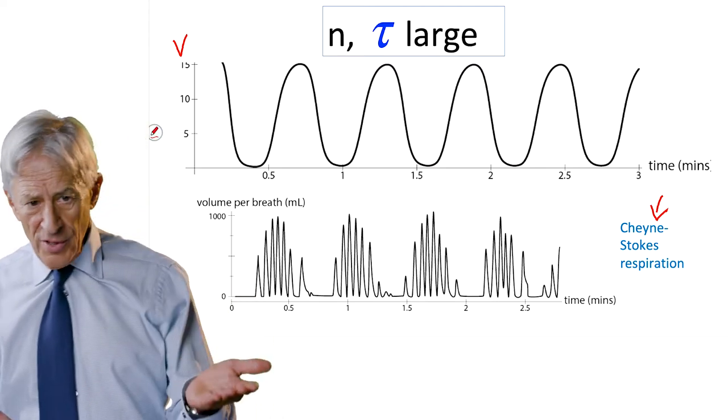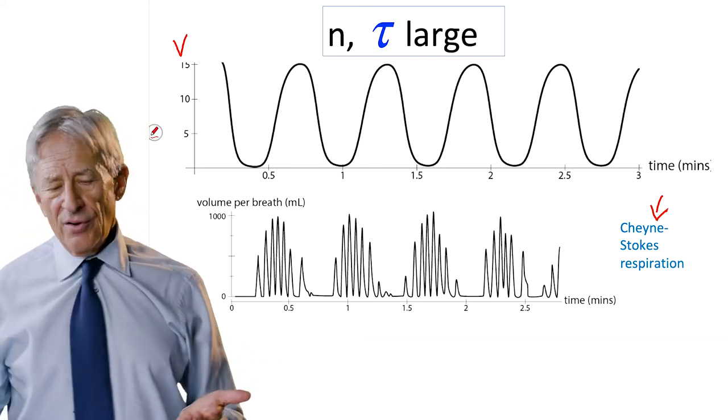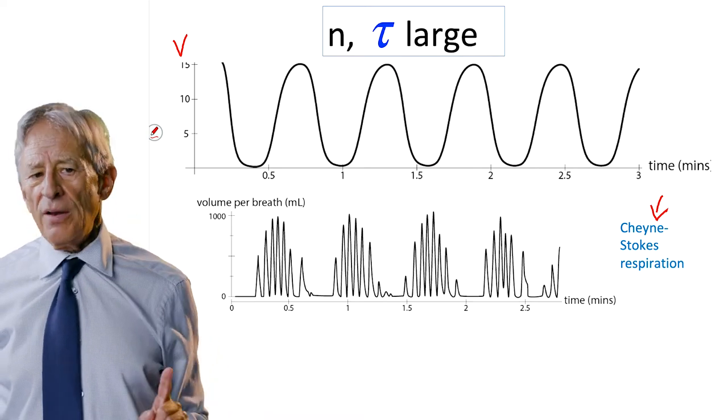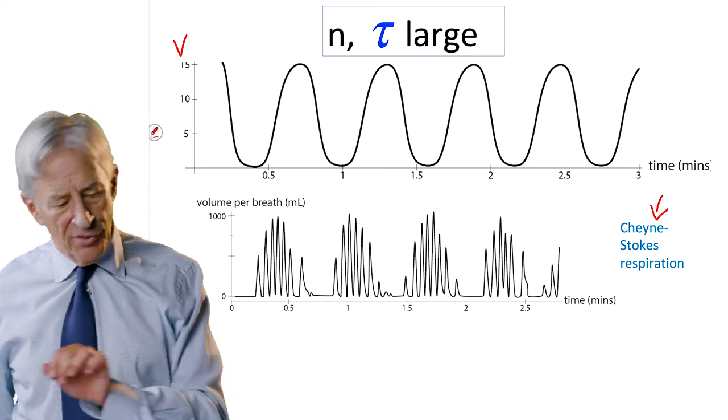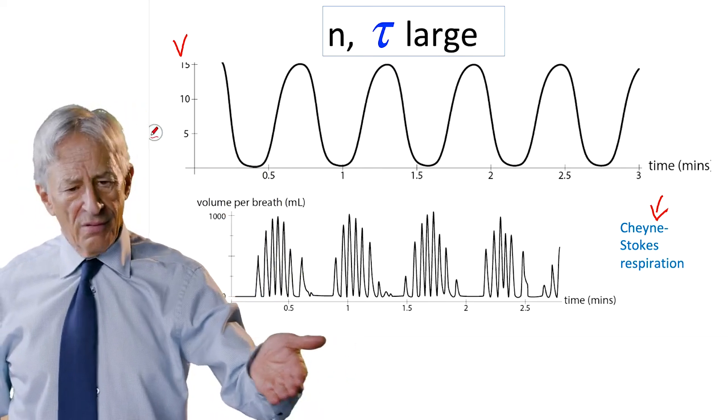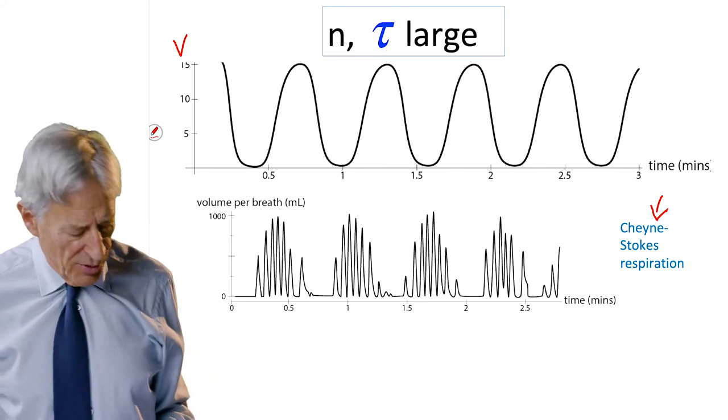So now I said you get this oscillatory response when N is large and when tau is large. And now you want to ask, what's the trade-off? What's the interplay? We have two parameters here, not one. We've been used to one parameter—whether you change the parameter or change the behavior, or not. Now we have two parameters.